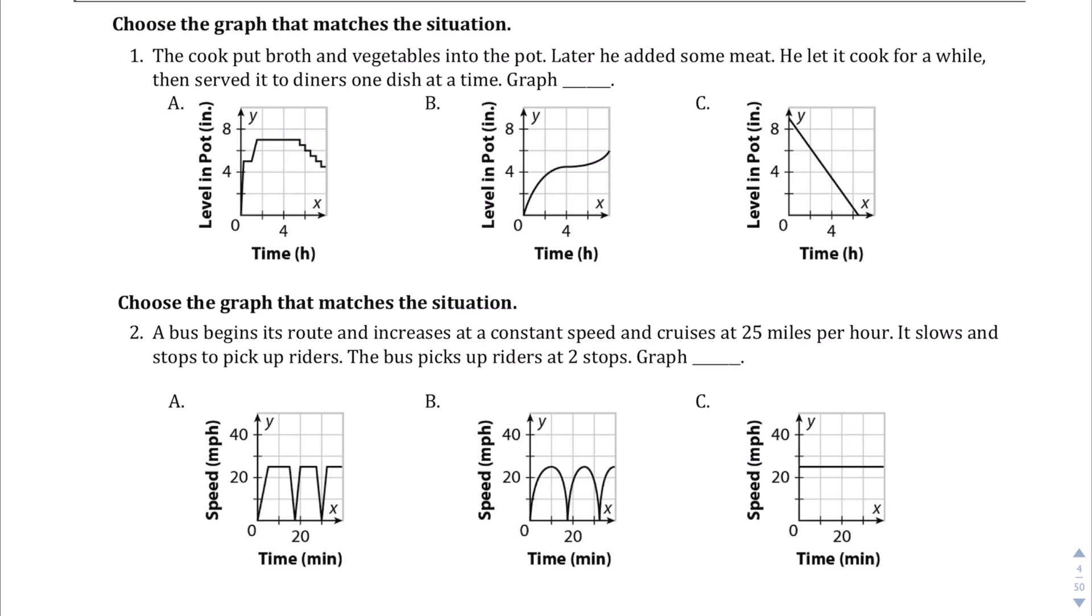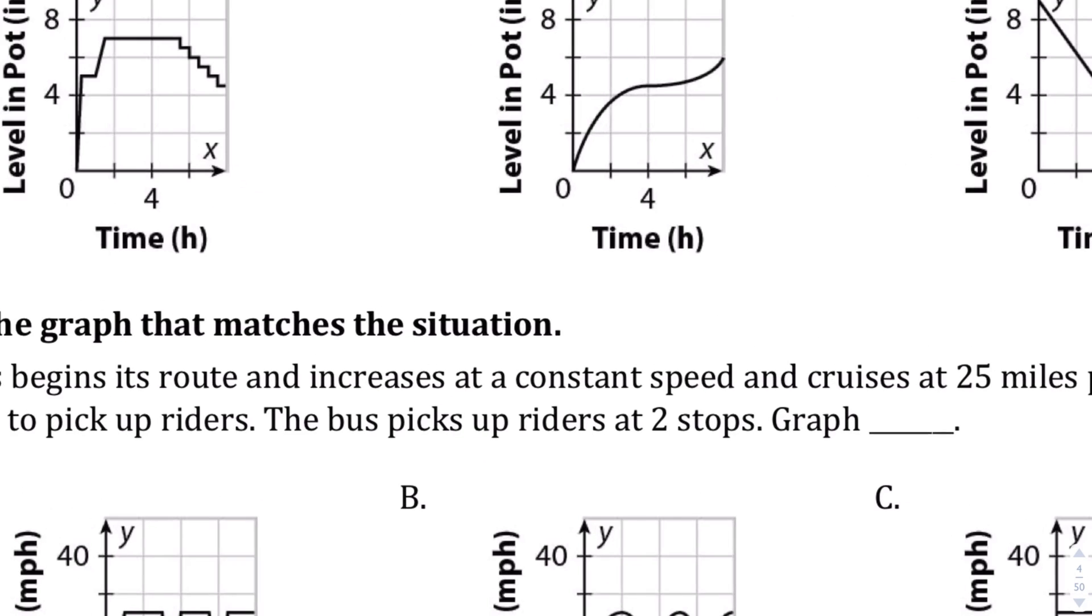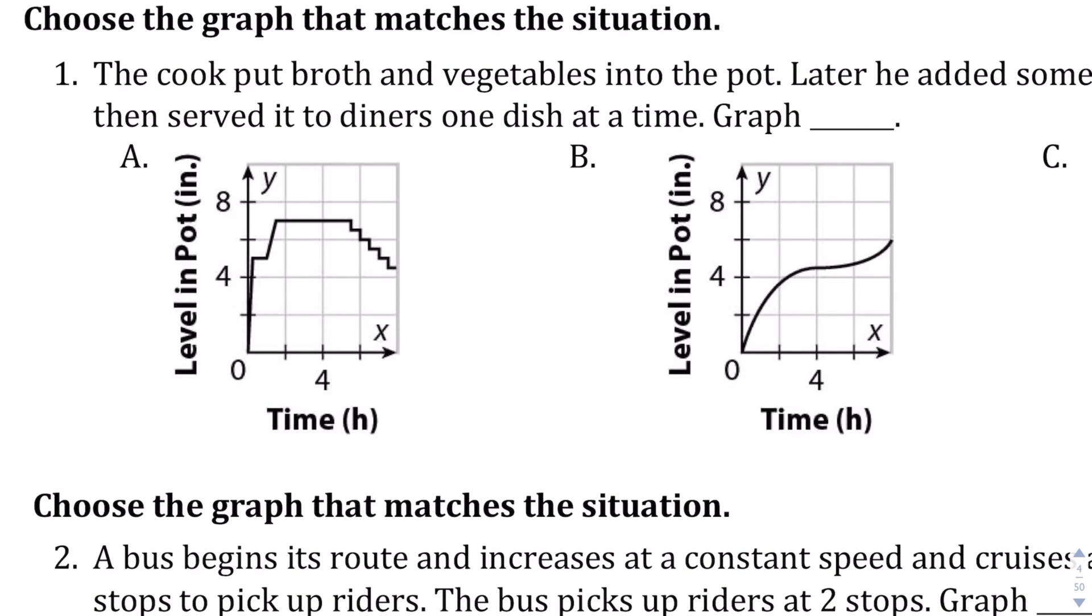So let's take a look at graph A, B, and C here. Let me zoom in actually. So we're told that the cook put broth and vegetables into a pot. We're comparing two things here actually: time and the level or the amount of water in the pot. So we can see here in this really beginning part that it's going quite steeply. And I think that's the part, if I can imagine, this is the part where the cook's putting broth and vegetables into the pot.